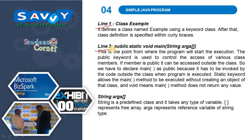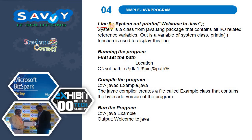String is a predefined class that takes any type of variable. String[] represents an array, and args represents a reference variable of String type. Line 5 contains System.out.println("Welcome to Java"). System is a class from the java.lang package that contains all input/output related reference variables. out is a variable of the System class, and println is the function used to display the line.